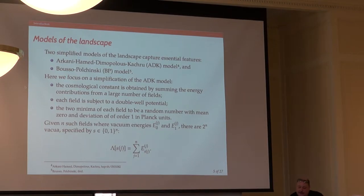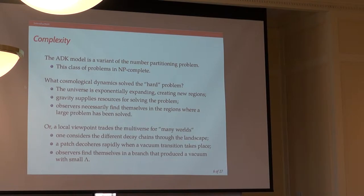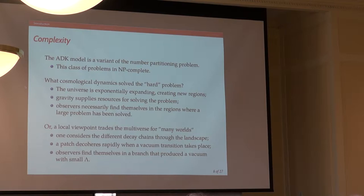Phrased in the correct way, this boils down to something called the number partitioning problem, which is one of the classical examples of an NP-complete problem. To find a solution to the number partitioning problem which minimizes the sum of the weights in each of the parts will typically require an exponential amount of work — it is an NP-complete problem, and all known algorithms for doing that are exponential.